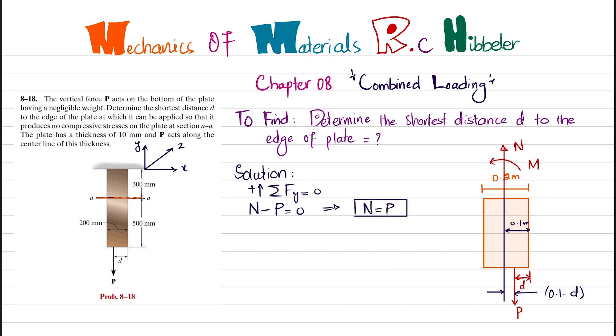Now we will find the moment. Sum of all moments about point C equals zero, taking counterclockwise moment as positive. So plus M minus P times 0.1 minus D equals zero. Therefore, moment M equals P times (0.1 minus D).